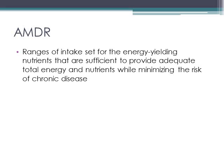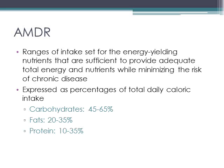Next, let's talk about the AMDR, or the Acceptable Macronutrient Distribution Range. Our macronutrients are energy-yielding nutrients — carbohydrates, fats and lipids, and protein. The AMDR are ranges of intakes set for the energy-yielding nutrients that are sufficient to provide adequate total energy and nutrients while minimizing the risk of chronic disease. These are expressed as percentages of daily caloric intake. For carbohydrates, the AMDR range is 45 to 65%; for fats, 20 to 35%; and for protein, 10 to 35%.